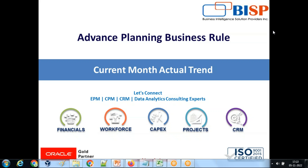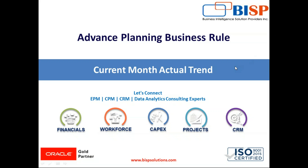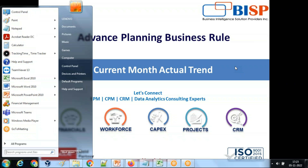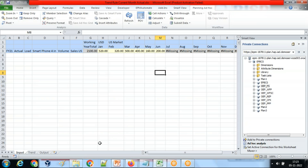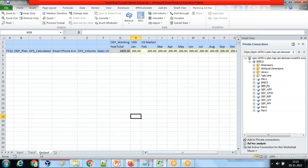Hello friends, and once again welcome to bi-solution.com. My name is Amit and today we are going to see another interesting example of advanced business rule writing. Today we are going to do another example of trends. For the sake of simplicity, I created a Smart View with three tabs: one for input, one for trend, and one for output.